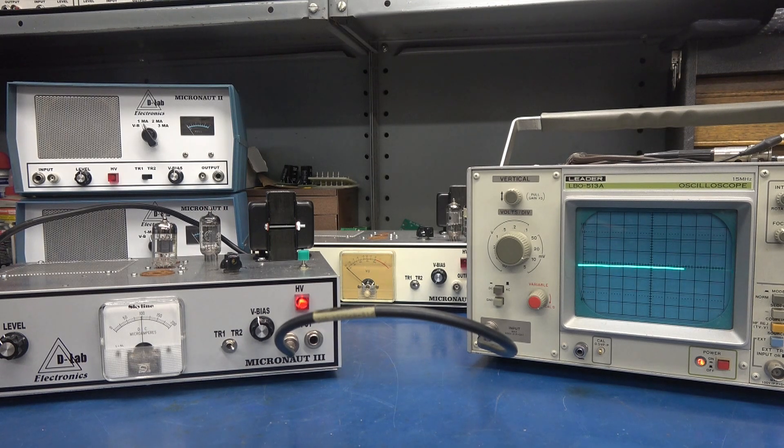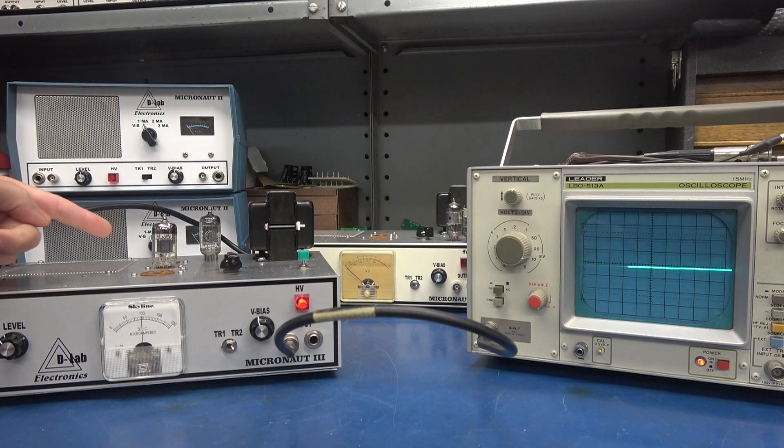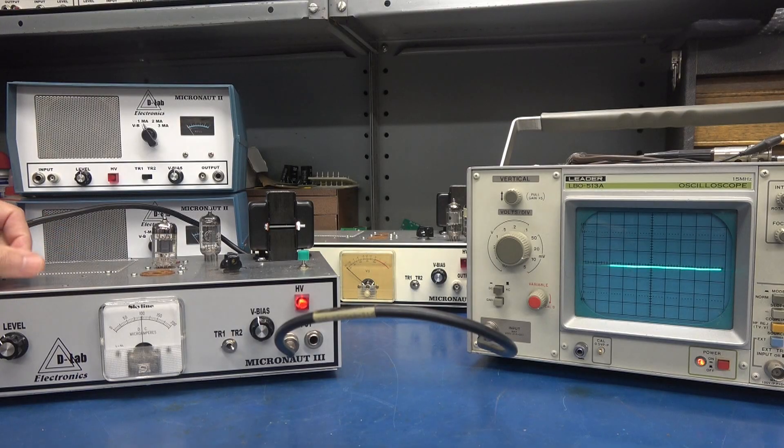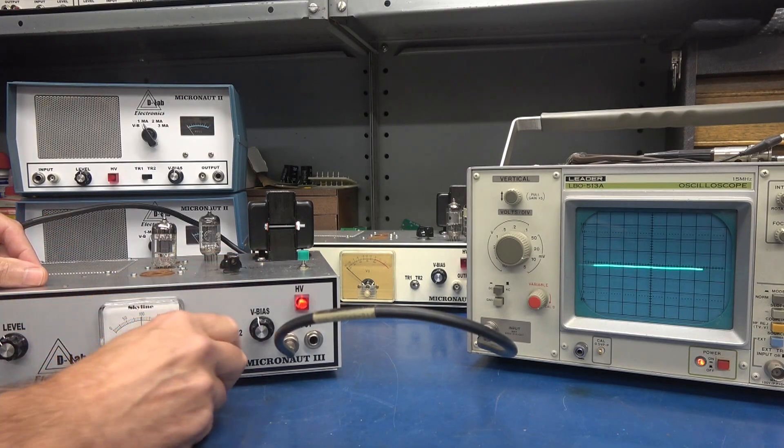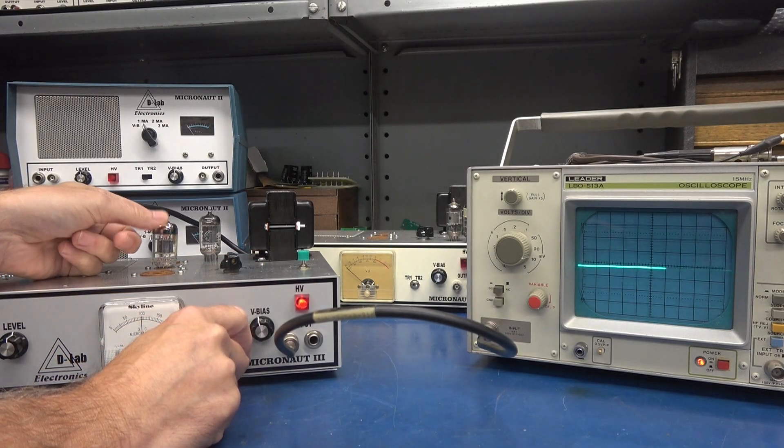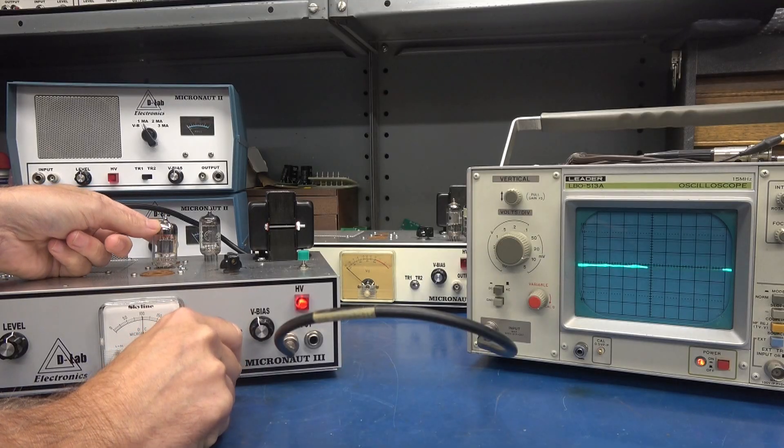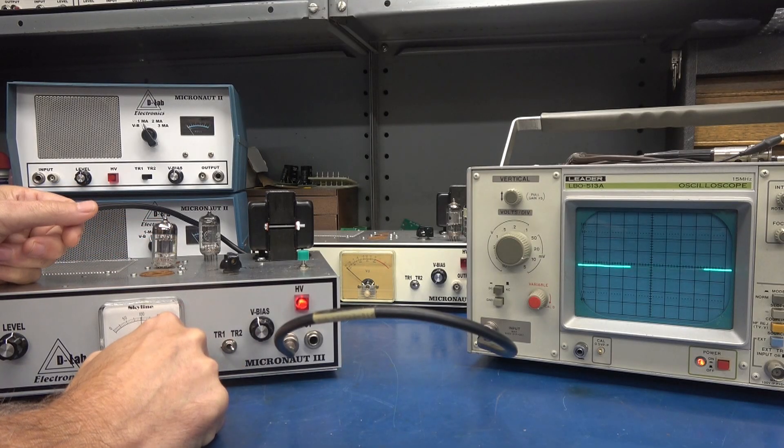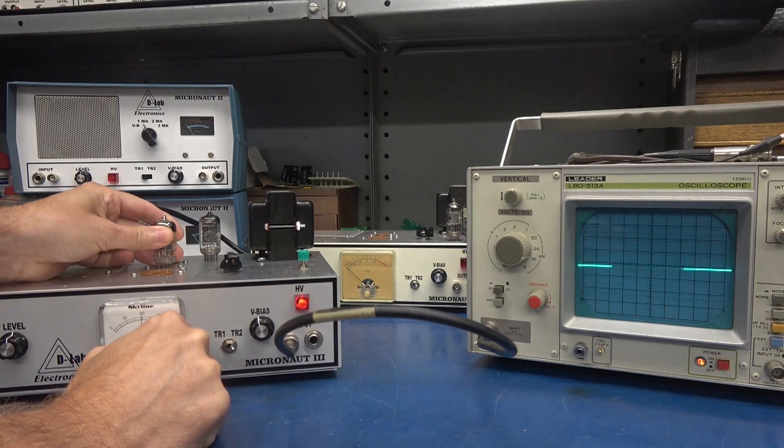All right, now we're going to do some testing using the new Micronaut 3. This is identical to the 2's in circuitry, it's just a little bit easier to construct. Right now I have a new Electroharmonix 12AX7 installed. We're monitoring on a scope. Go to the other side. So you see that guy is in pretty good shape.